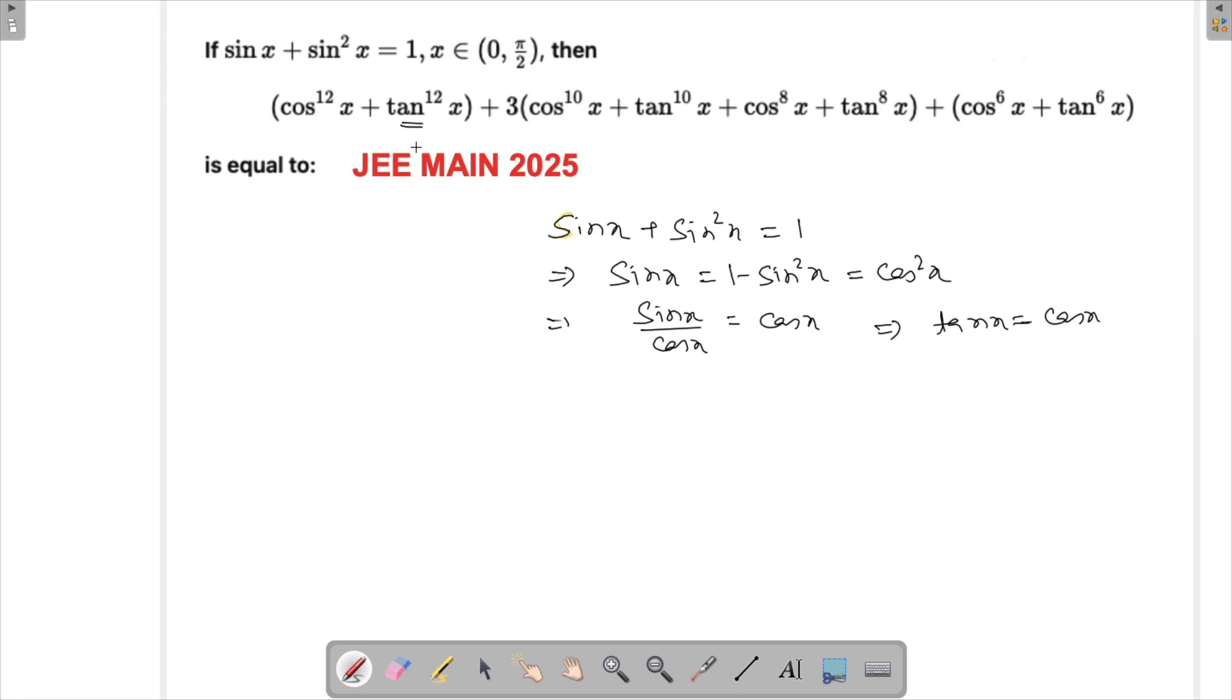So we will try simplifying this expression by removing tan from here. This is cos raised to the power 12x and tan raised to the power 12x, so that will become 2 cos raised to the power 12x.